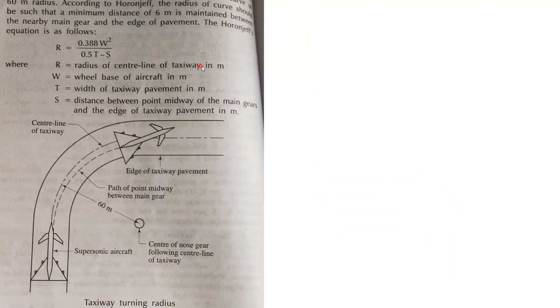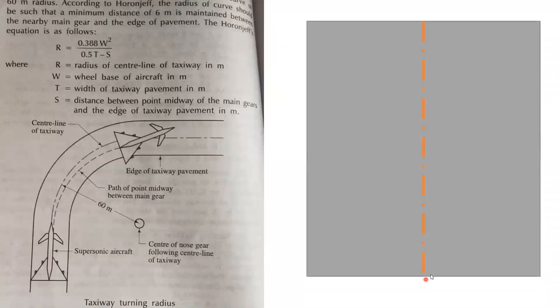According to the Horan-Jeff equation, the radius of the curve should be such that a minimum distance of 6 meters is maintained between the nearby main gear and the edge of the pavement. The Horan-Jeff formula to find the radius for the center of the taxiway is: r = 0.388 × w² / (0.5t − s).